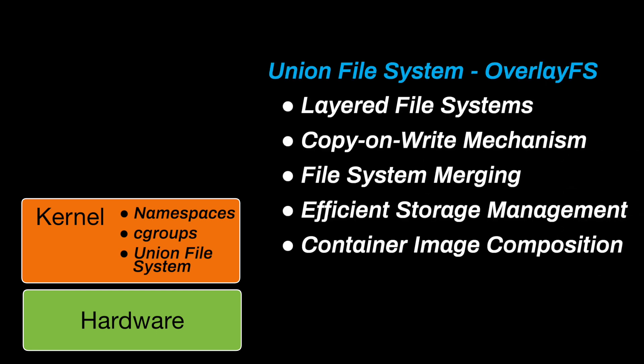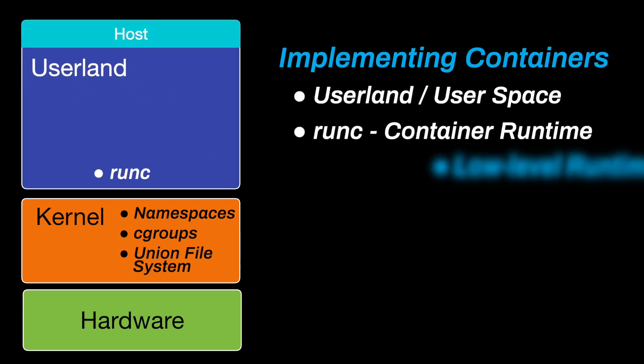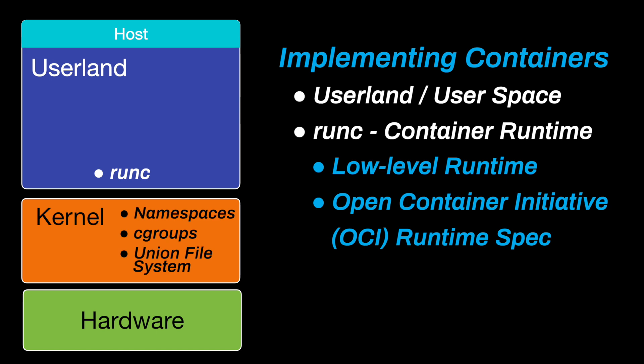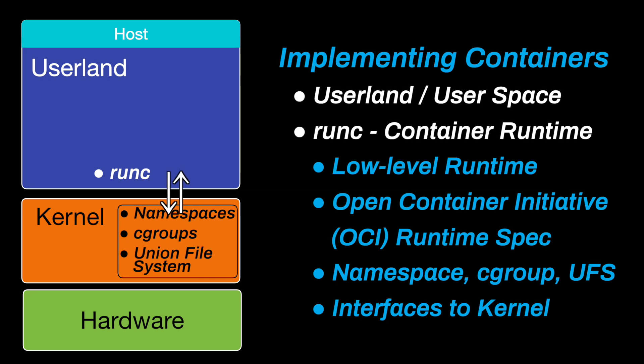Then there is the Union File System, which allows multiple file systems to be layered where changes are written to an upper layer while preserving the lower read-only layers. This mechanism is essential in containers, enabling efficient storage use and the ability to compose container images from a base image with minimal duplication. This is the least intuitive concept to understand about containers — let's call it an implementation detail. Moving up to Userland: RunC is a low-level container runtime that adheres to the Open Container Initiative runtime specification, which sets a standard for container operations. The primary function of RunC is to create and run containers by setting up the necessary namespaces for process isolation, configuring cgroups to manage resource usage, and establishing the root file system that the container will use. RunC interacts directly with the Linux kernel to create these isolated environments.